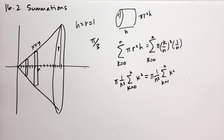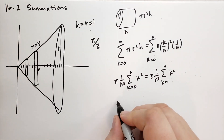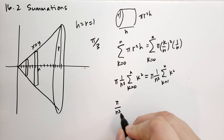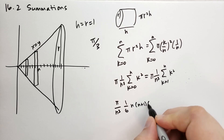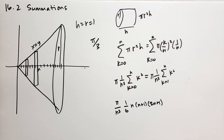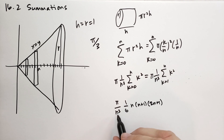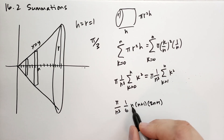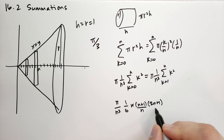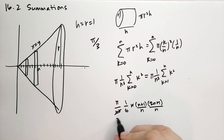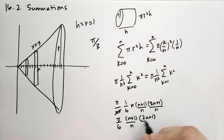We've already worked out in the last section what this sum is. It's going to be pi over n cubed times 1 sixth times n times (n plus 1) times (2n plus 1). This comes from exercise two of section one. Now we can distribute the n cubed: one of these n's cancels one factor, one divides here, and one divides there, so we get rid of all those n cubed. So we have pi over 6 times (n plus 1) over n times (2n plus 1) over n.